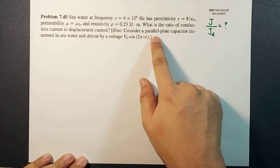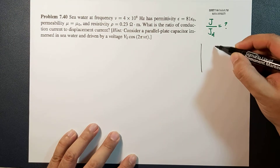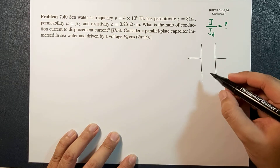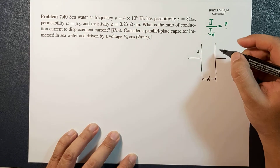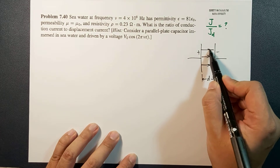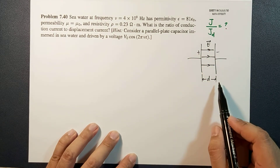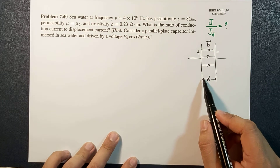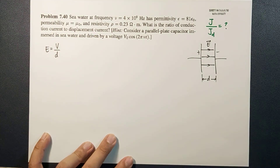Based on the hint, we have a parallel plate capacitor where the distance between the plates is d. The electric field points from the positive plate to the negative plate. For a parallel plate capacitor, the electric field is related to the potential by E = V/d.